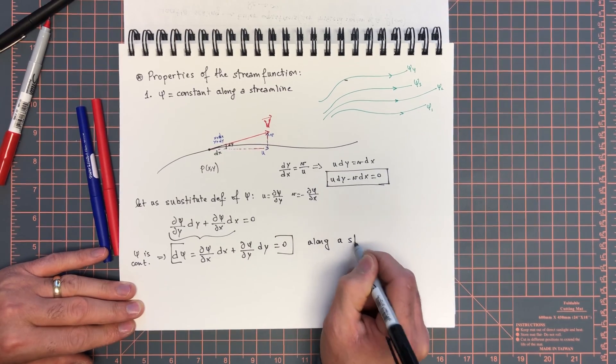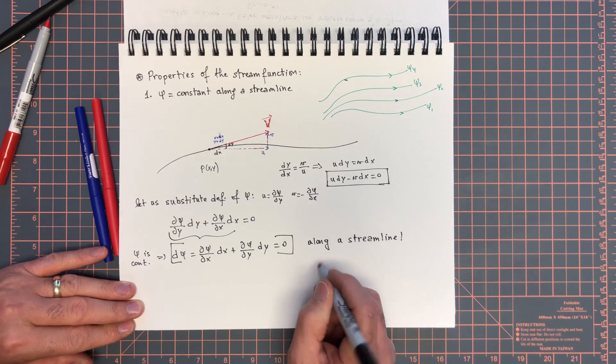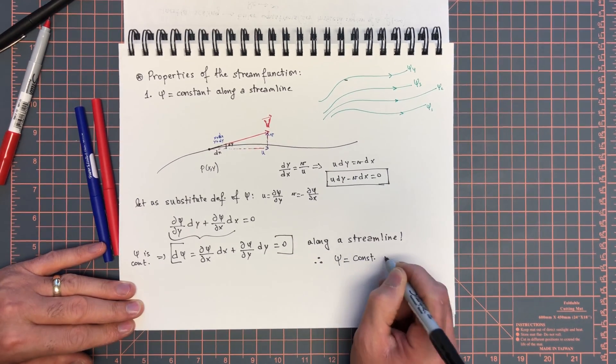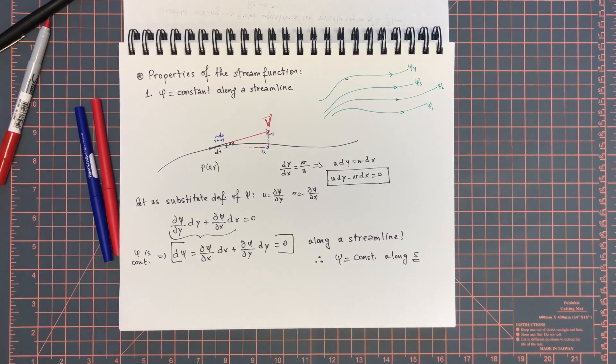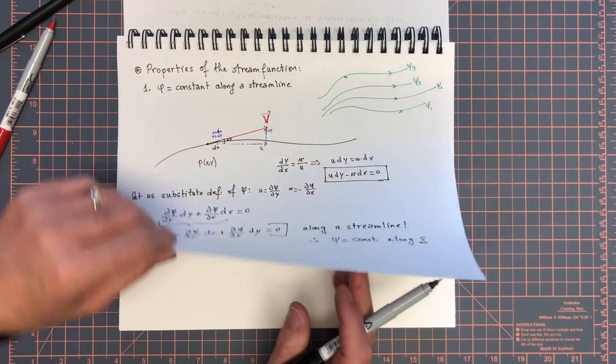And therefore dψ equals zero along a streamline, and therefore ψ equals a constant along streamline s. That's a really great result, and that's partly why we call this the stream function.